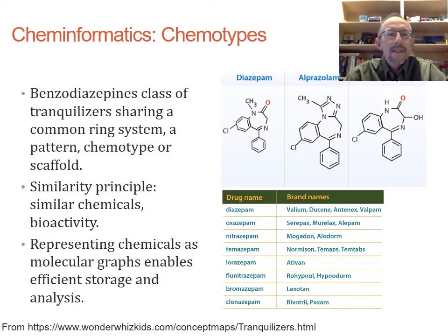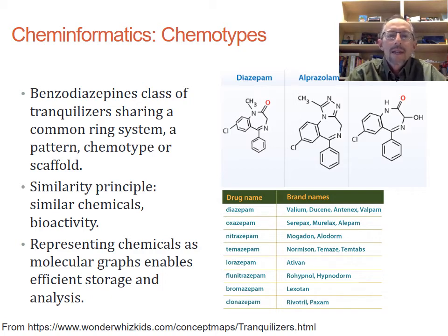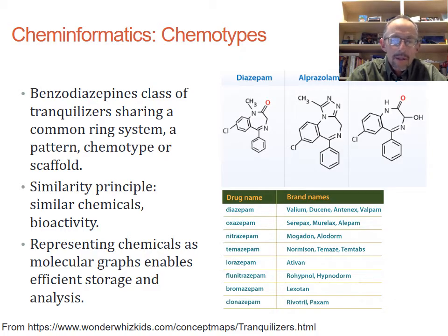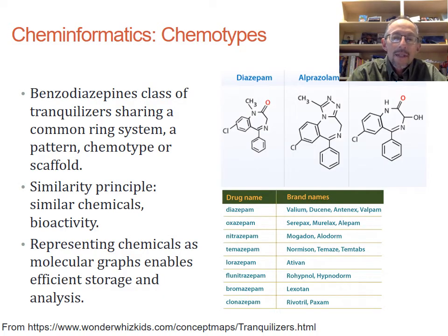Here's a chemotype called benzodiazepines — a class of tranquilizers which share a common ring system. You can see those fused rings forming the central features of these three examples. Important terms are: a chemical pattern, a chemotype, or a scaffold around which additional chemical functionality is attached. This makes use of the so-called similarity principle — that similar chemicals will have similar biological effects. That principle is not absolute, but it does hold. Representing chemicals as molecular graphs enables efficient storage and analysis.